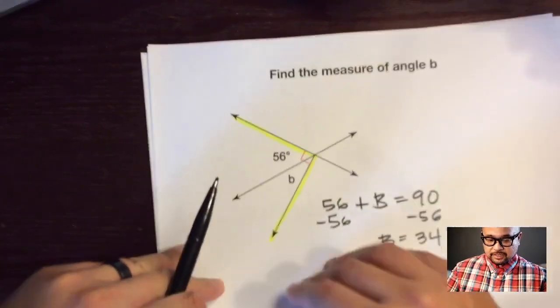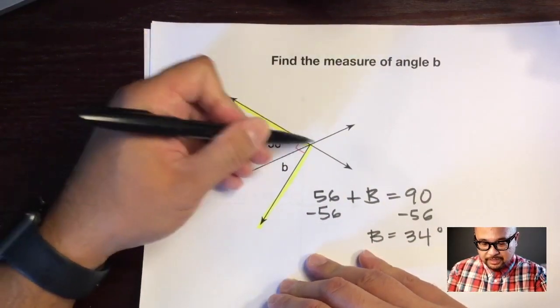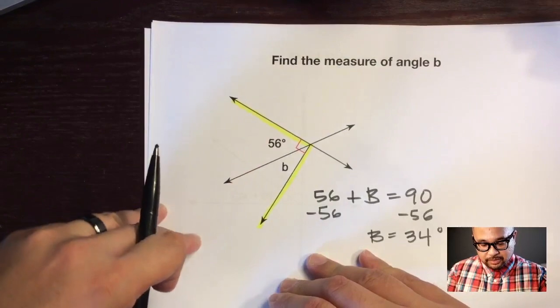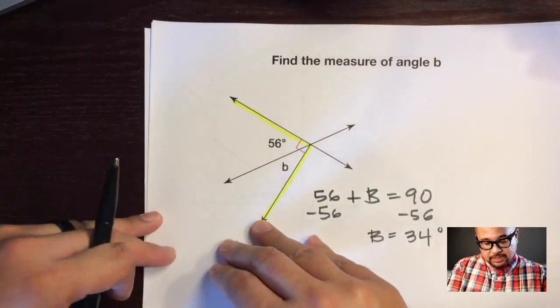The key is this little square right here, saying that this big angle that these two angles are within is 90 degrees.